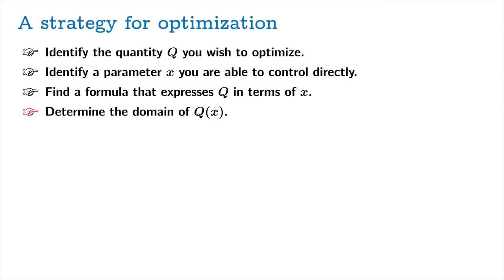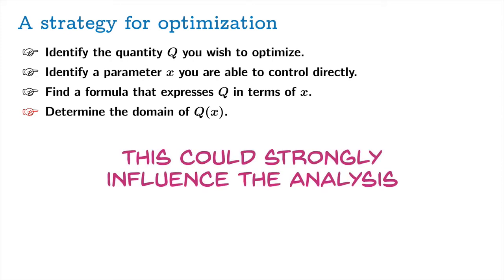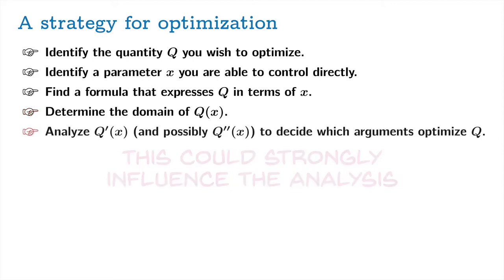Next, determine the domain of your function. Knowing your domain is a good thing, and it could strongly influence the analysis. Finally, analyze Q prime of X and possibly Q double prime of X to decide which arguments optimize Q. This is where what the sign of the first derivative tells you about monotonicity, and what the second derivative tells you about concavity, become possible tools in analyzing your function and arriving at the optimal arguments.